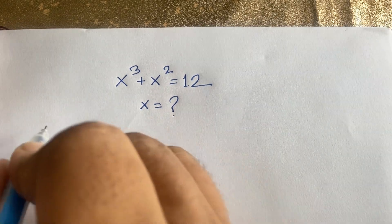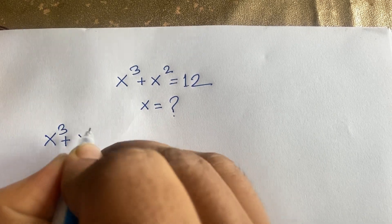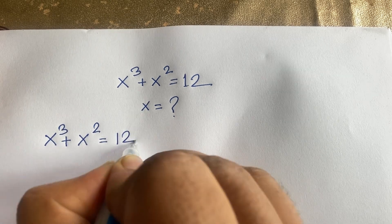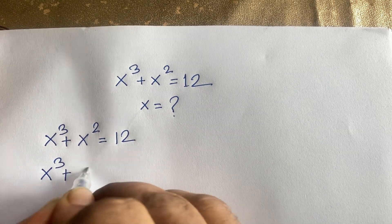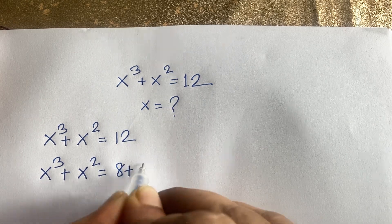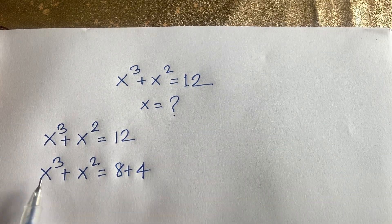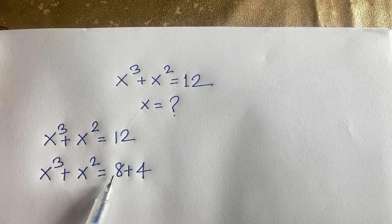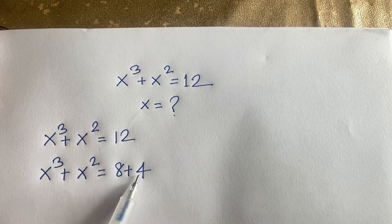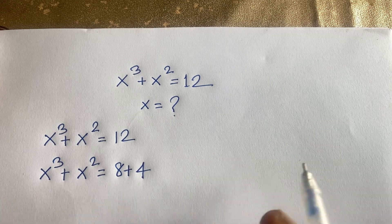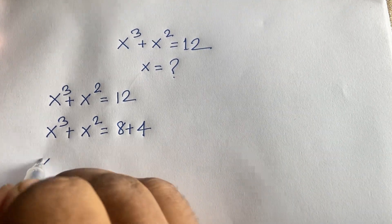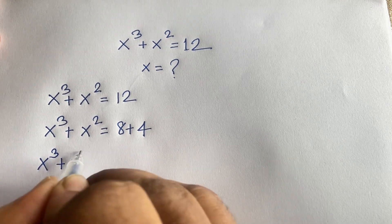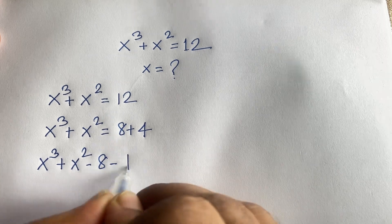Our equation is x cubed plus x squared equals 12, which is 8 plus 4. So we can rewrite this as x cubed plus x squared minus 8 minus 4 equals 0.